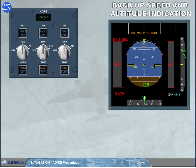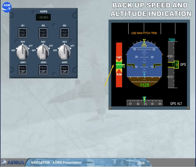In case of unreliable airspeed indications, for example after the three ADRs failure, the backup speed and altitude indication are available on both PFDs, provided the three ADRs have been set to off. The speed scale is replaced by a backup speed scale based on the aircraft's angle of attack information and on the slat-flap configuration from SFCC. The backup altitude scale is based on GPS altitude information. Due to GPS altitude inaccuracy, the last two digits are double dashed. The vertical speed indication is not available. Note: on the FMA, an amber 'use man pitch trim' is displayed when the landing gear is down.